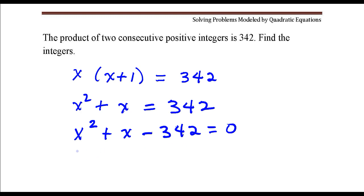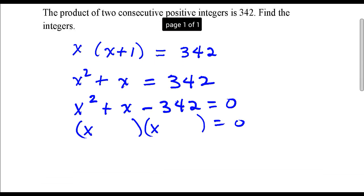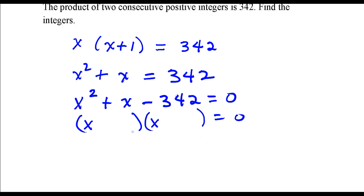And the next thing I'll do is factor this quadratic equation. Alright, so I'm looking for two numbers whose product is negative 342, but whose sum is 1.